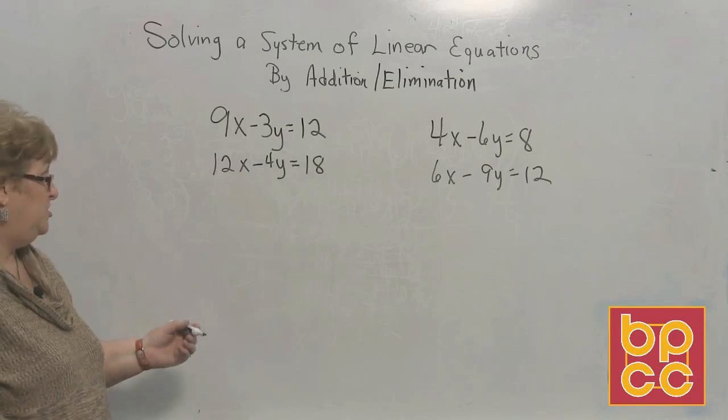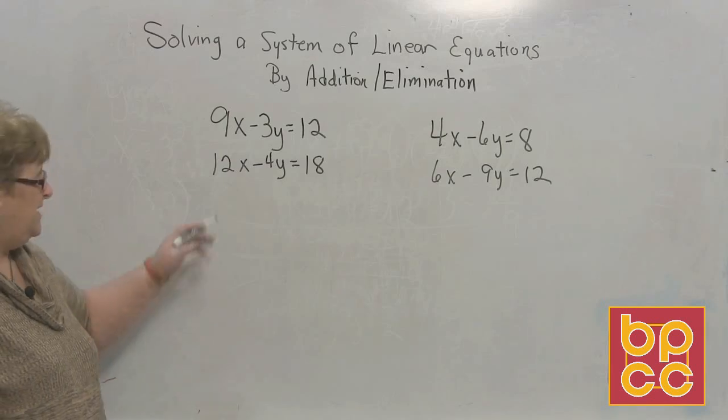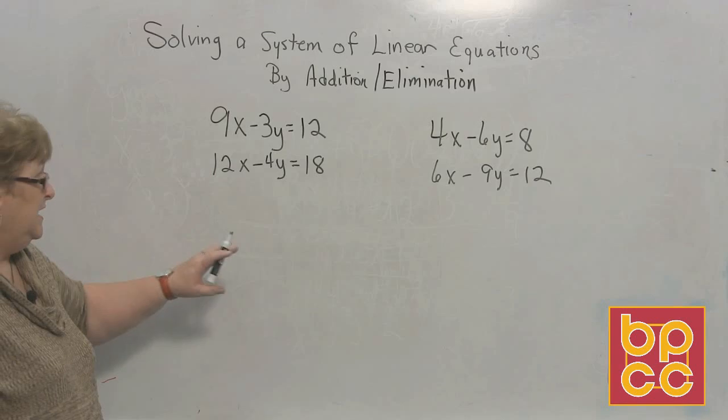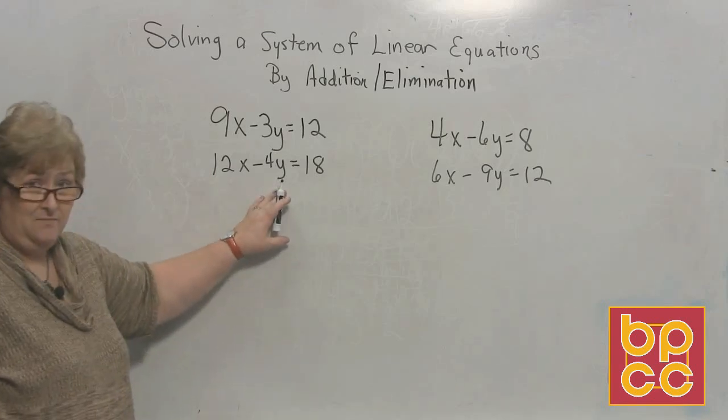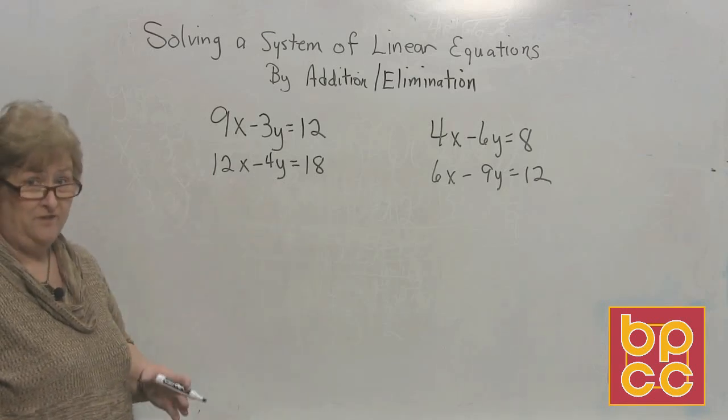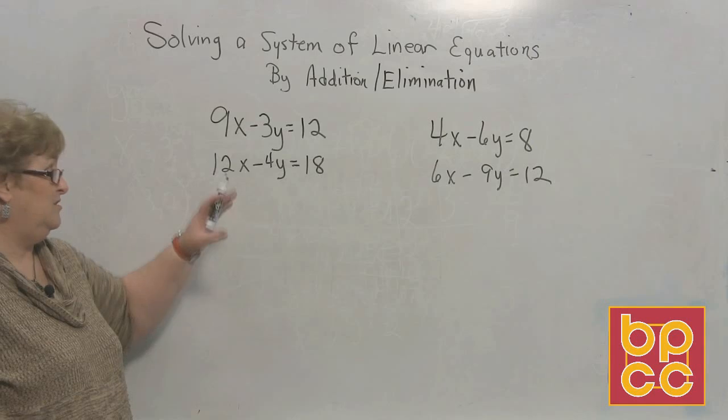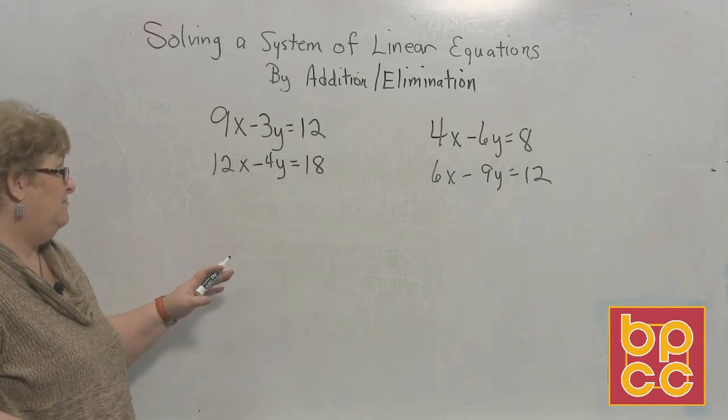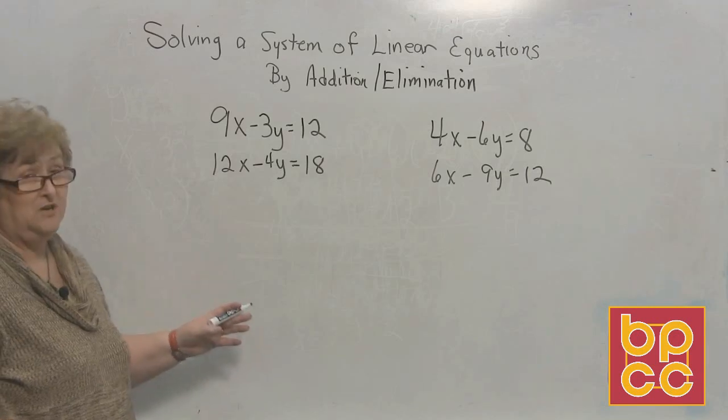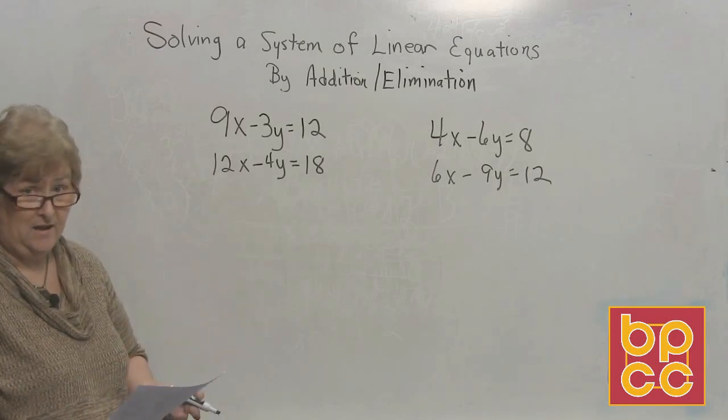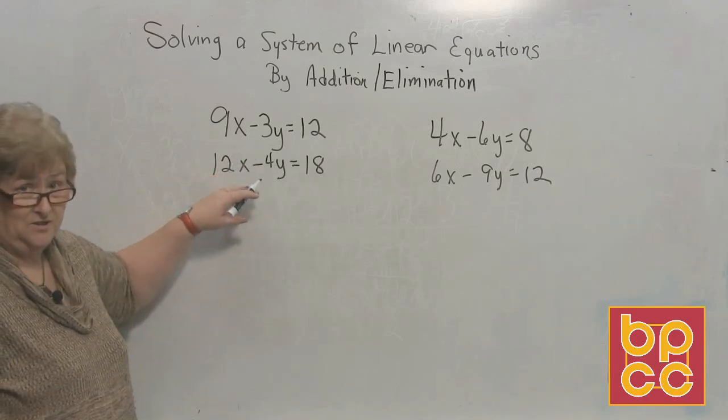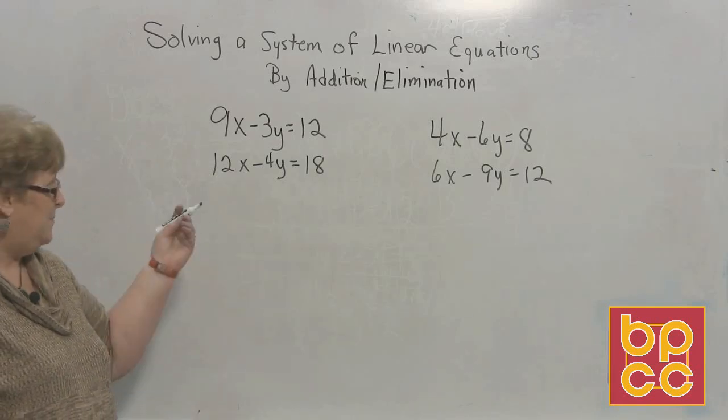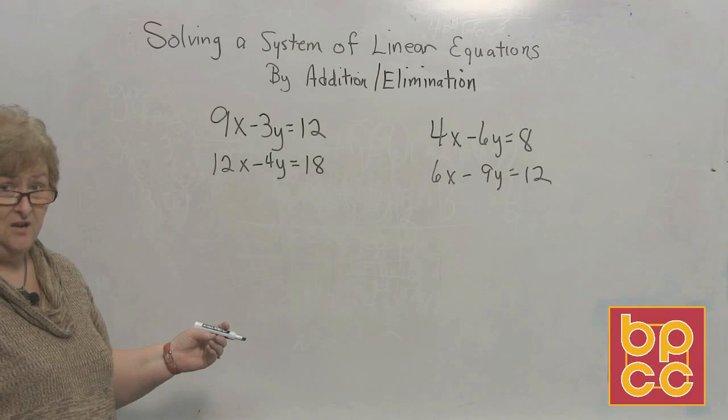So if we choose to do x, we would have to make both of these turn into 36, one positive and one negative. If we choose to do the y, 3 and 4 have a 12 in common. I think I'm just going to go with x again. I like a lot of positive here.